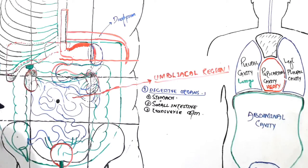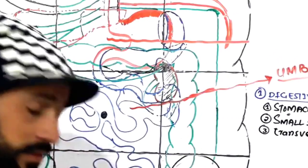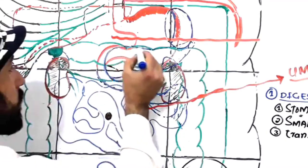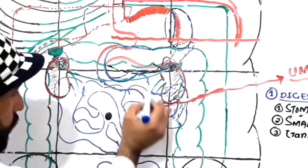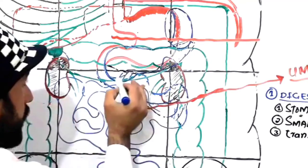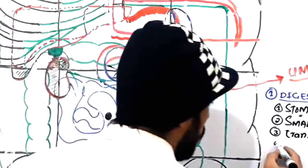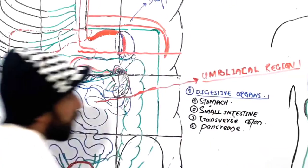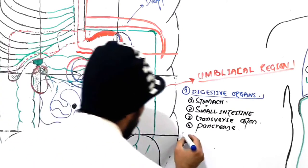One more important digestive organ: you can see here — this is our pancreas. Some parts of the pancreas come down into the umbilical region, and the pancreas plays an important role in the digestion of food. So we say some parts of the pancreas are also found in the umbilical region.